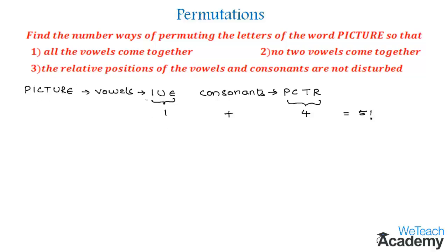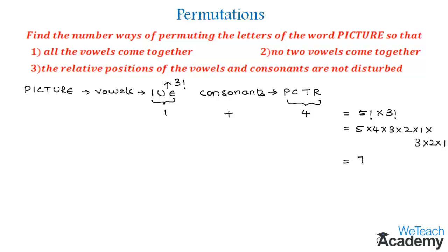The three vowels can also be arranged among themselves in three factorial ways. So the number of permutations in which the three vowels come together is 5! × 3!. Five factorial is 5 × 4 × 3 × 2 × 1 and three factorial is 3 × 2 × 1. Multiplying these gives 720. So the total number of ways is 720.